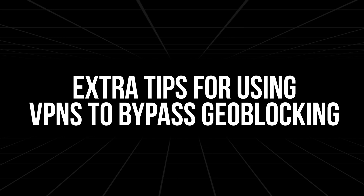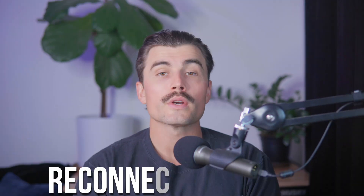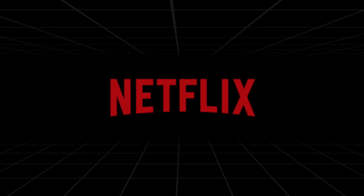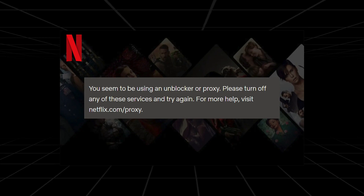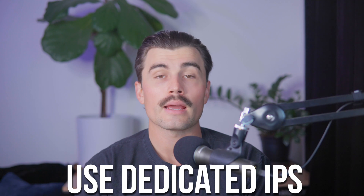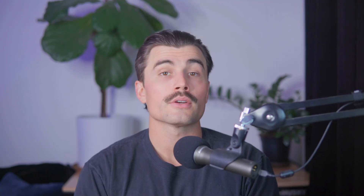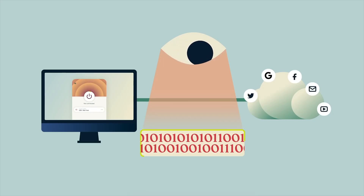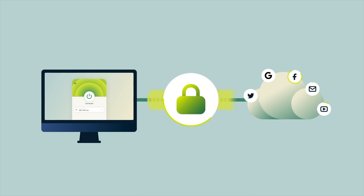Here are a few extra tips for using VPNs to bypass geoblocking. If a streaming site like Netflix blocks a VPN IP address, just disconnect and reconnect to get a new IP address. If you're using NordVPN, consider a dedicated IP for extra security and a smoother experience. Regularly clearing your cache and cookies can also help reduce location conflicts when accessing restricted content.